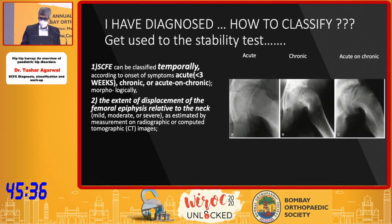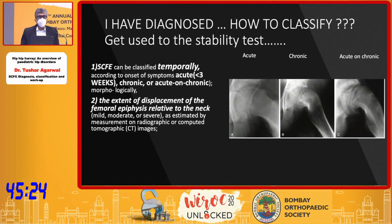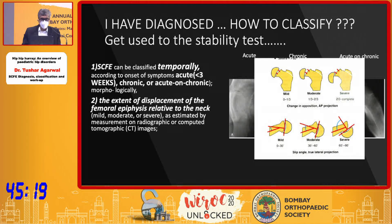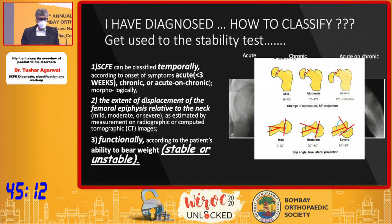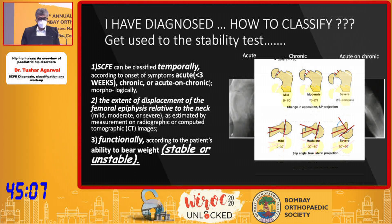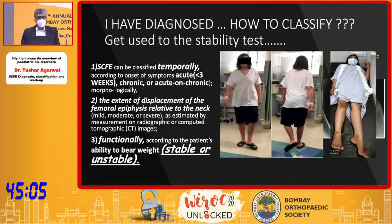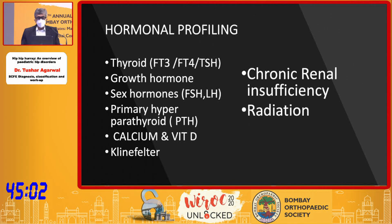To quickly classify: acute is all patients symptomatic for less than three weeks. Chronic are patients symptomatic for more than three weeks with x-ray showing signs of callus formation. Acute-on-chronic is somewhere in between — the patient has been symptomatic for some time and then suddenly becomes more painful. The Southwick angle classifies severity: 0–30 degrees mild, 30–60 moderate, and 60–90 severe. Currently, the most important is the functional classification — whether the patient is able to bear weight or not — as unstable patients have a worse prognosis.